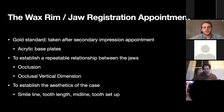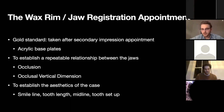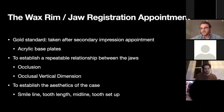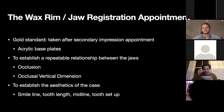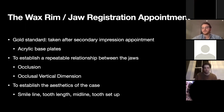There are two key things you're doing at this appointment. First, you're establishing a repeatable relationship between the jaws — because in complete dentures we have no reference points — in terms of how the teeth come together and the occlusal vertical dimension (OVD), which is the distance between the top and bottom jaws when the denture teeth are meeting. You're also looking at aesthetics: the smile line, tooth length, midline, and how you're going to set the teeth up.